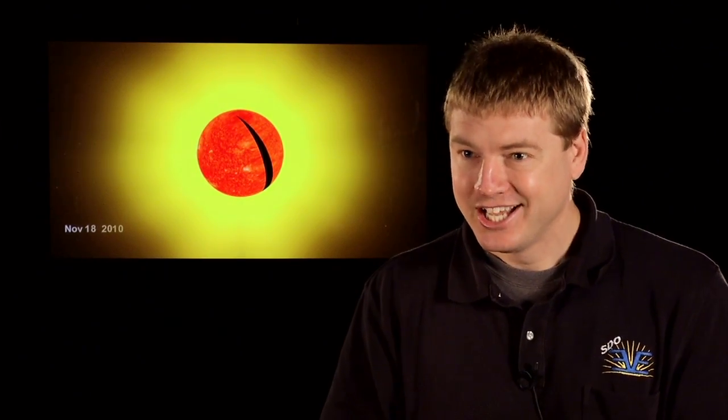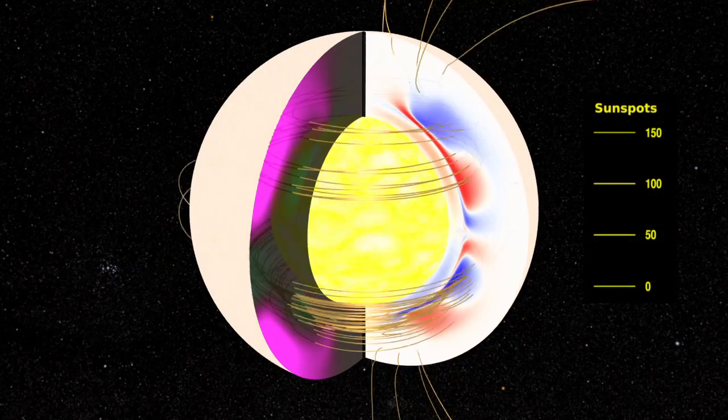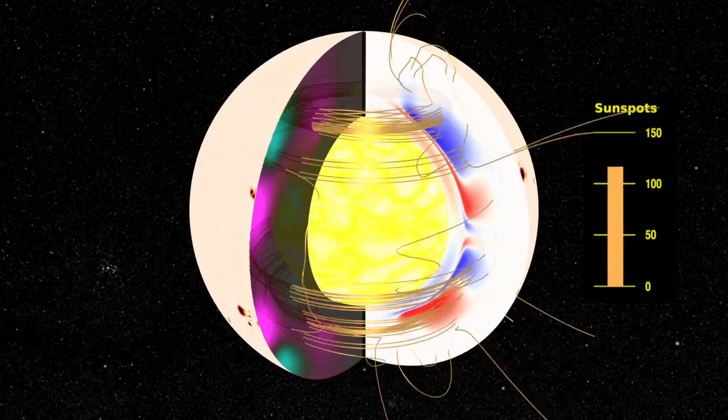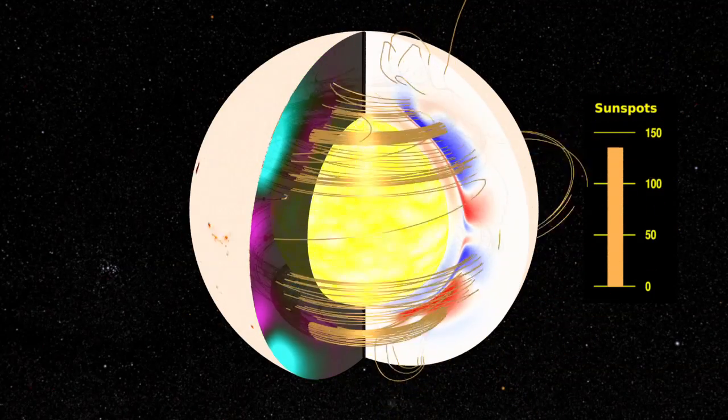Solar flares and CMEs are all driven by magnetic reconnection. This is where the Sun winds up the magnetic field and then causes oppositely directed magnetic fields to annihilate. But you can't just get rid of magnetic fields or energy — you have to convert and transfer that energy into other things such as plasma motions, accelerating the plasma, heating up the plasma, and also giving out more light.